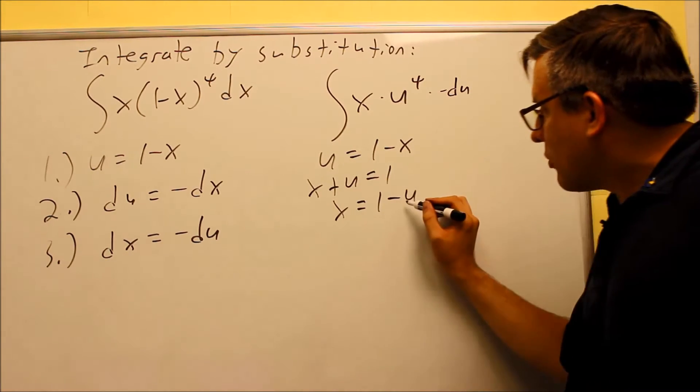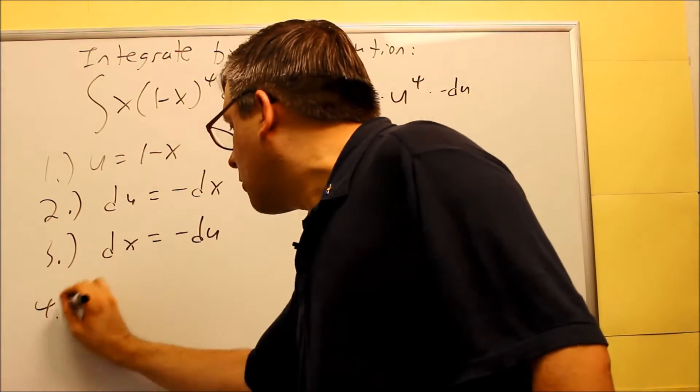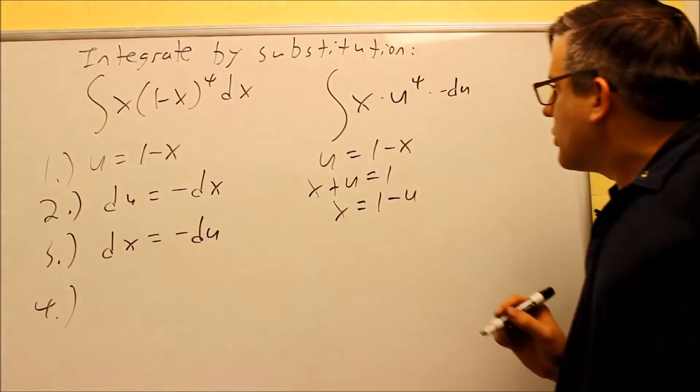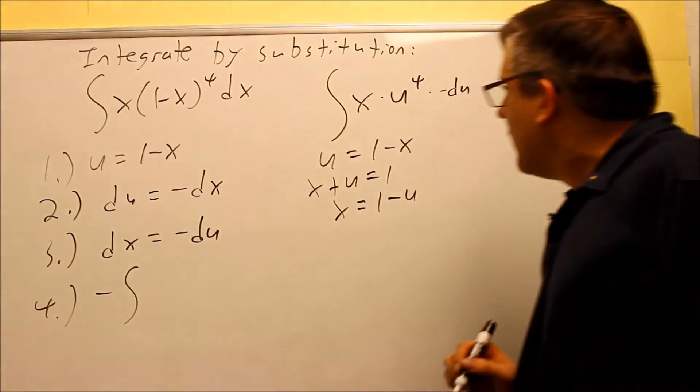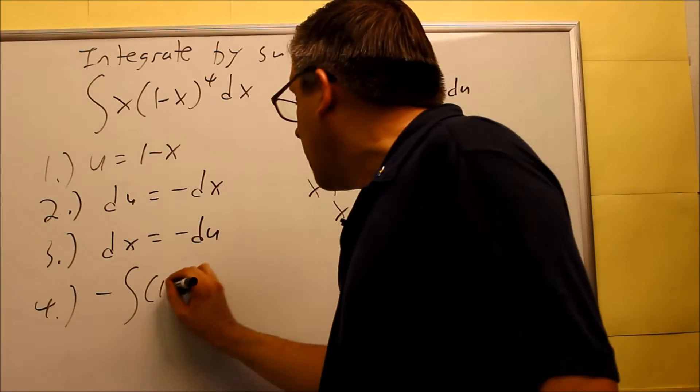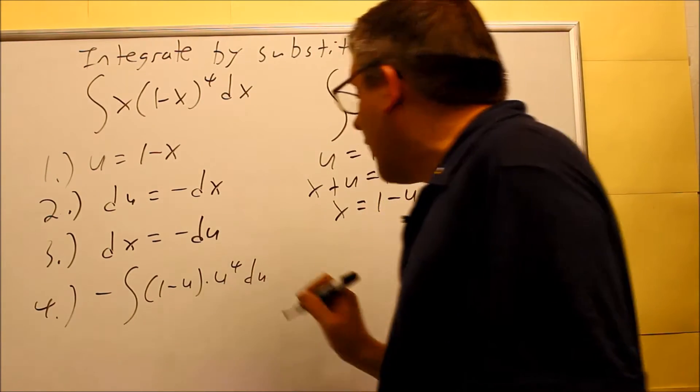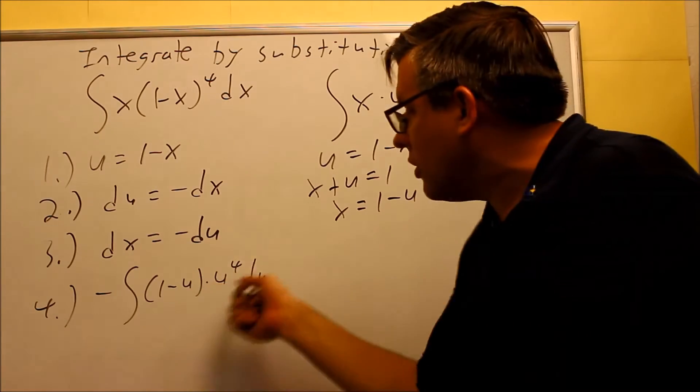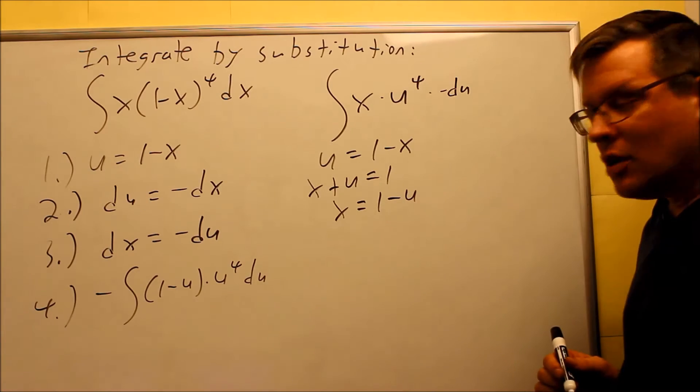Now that I have this substitution, I'm going to put that into there, and now I'm ready for my step number 4. When I put this in there, the negative is going to be on the outside of the integral, and my X is going to be a 1 minus U, and I still have the U to the 4th there, and then I have the DU. So this is now going to be the actual integral that I'm going to work with, and now we have everything in terms of U like we want.